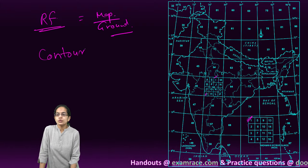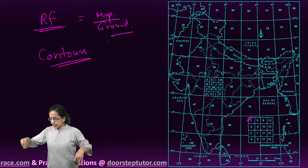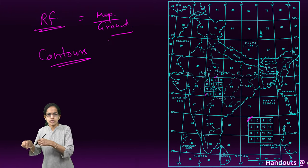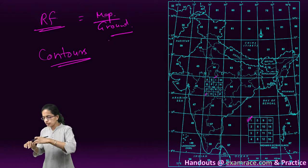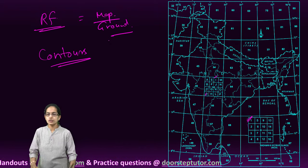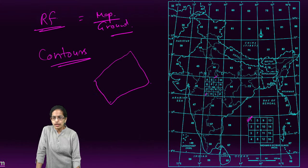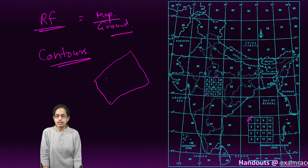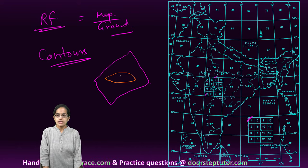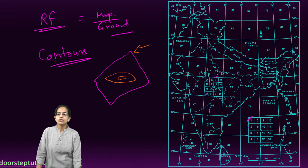Contours are the lines that join places of equal height. For example, if this is a ground and here it is 100 cm high at three points, I join all three. Near to it at 200 cm I draw another line joining those three points. So contour simply means joining places of equal height — let's say four points at 100 meters elevation are joined, then another set at a different elevation, and so on.